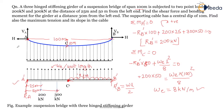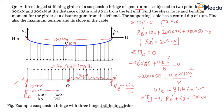Now calculate RA-dash using summation of forces in the Y direction equal to zero: RA-dash + RB-dash = 500 kN (that is 200 + 300). Substituting RB-dash = 200, we get RA-dash = 300 kN.